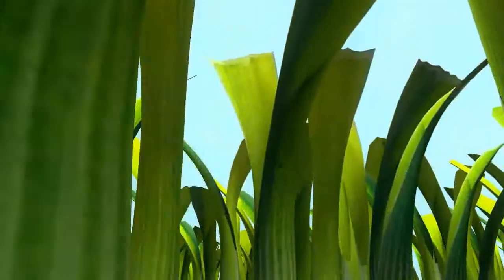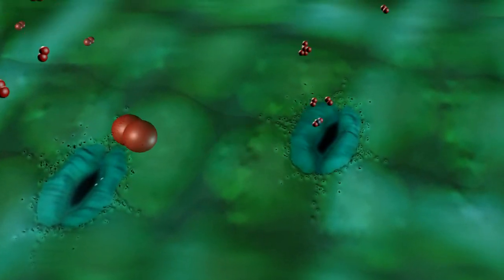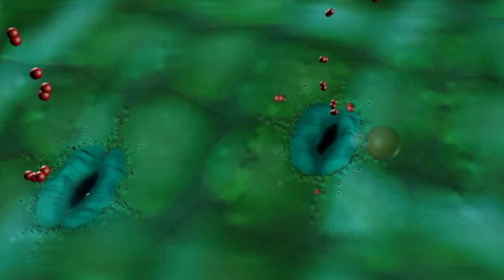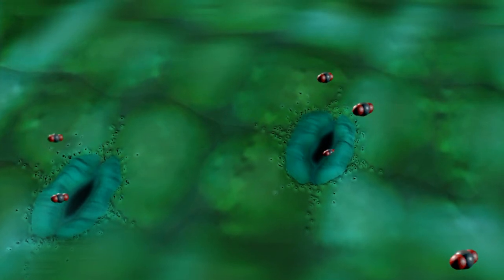First, we encounter an outer protective cuticle which allows carbon dioxide, oxygen and water to enter and exit the leaf through stomata, hydrophilic pores and cracks.